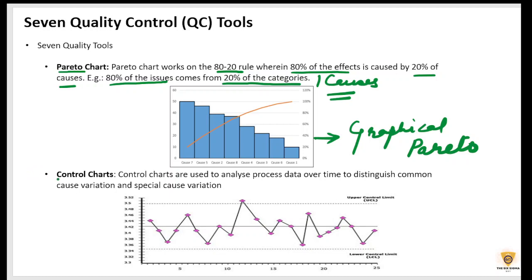So the next quality control tool is a control chart. Well, control chart is used to analyze the process data over time to distinguish between a common cause variation and a special cause variation. So, yeah, this axis is our time, right? And time recording is plotted.